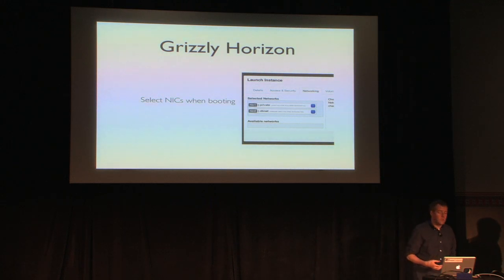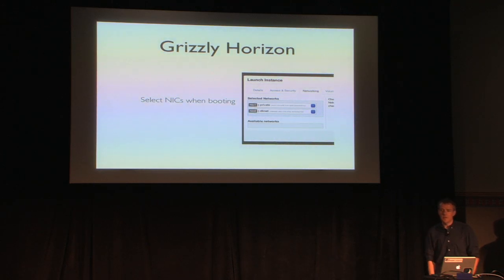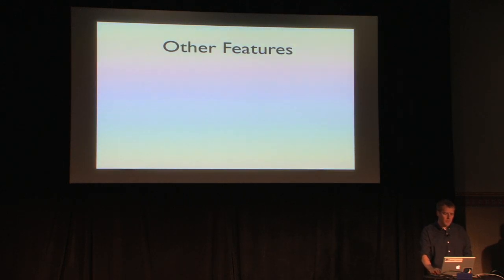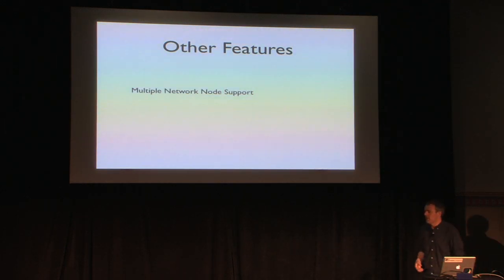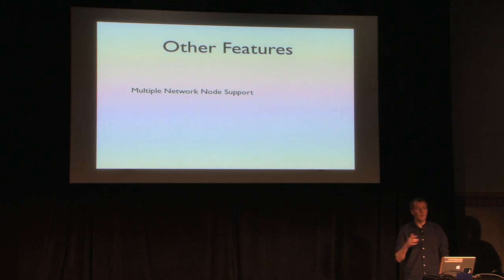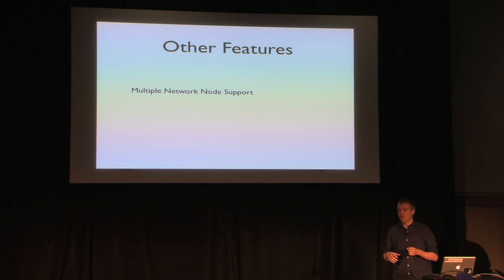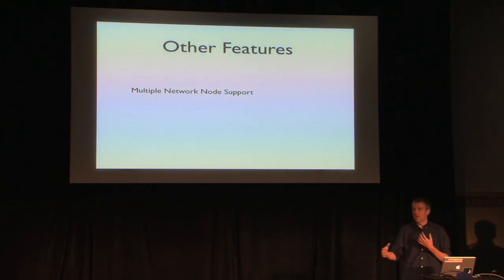The other thing that's new in Grizzly is you can select which NICs you're attaching to an instance. Previously in Folsom, if you booted it, it got every network you owned in some order. Now you can actually choose which NICs get booted and you don't have to do discovery to figure out which networks are attached where. We also added multiple network node support. In Folsom, you could have DHCP services and L3 services but they all ran on one host for all tenants — not very scalable and not very fault tolerant. We've been working on spreading that load out across multiple network nodes to limit faults and failures.